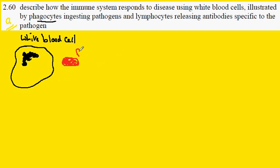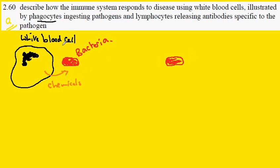So here we have a bacteria. The white blood cell can detect the presence of the bacteria because of chemicals which the bacteria gives off. This type of white blood cell is called a phagocyte — 'phago' meaning feeding and 'cyte' meaning cell.